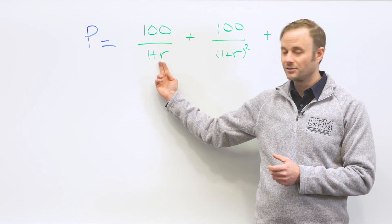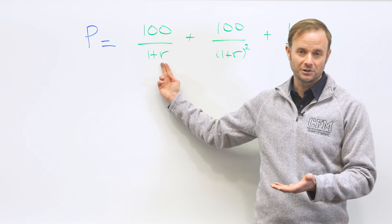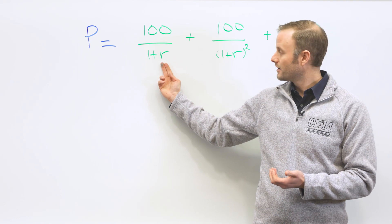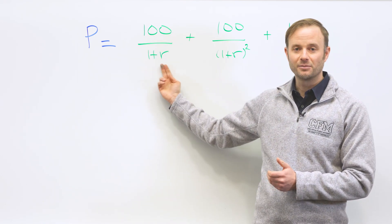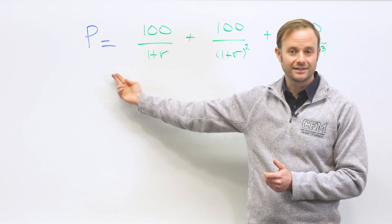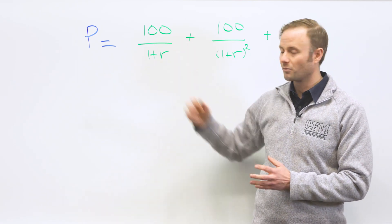We're going to have to use a discount rate, r, which we saw earlier. The first $100 you get is going to look exactly like before. To bring that back to today, it's 100 over 1 plus r.